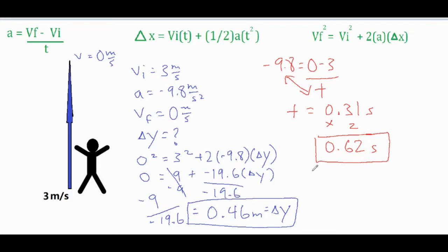So if I plugged in VI of 3, VF of negative 3 along with my acceleration of negative 9.8 meters per second squared, I can plug it into the same formula that I did over here. So then if I did that and I used all of those same values.